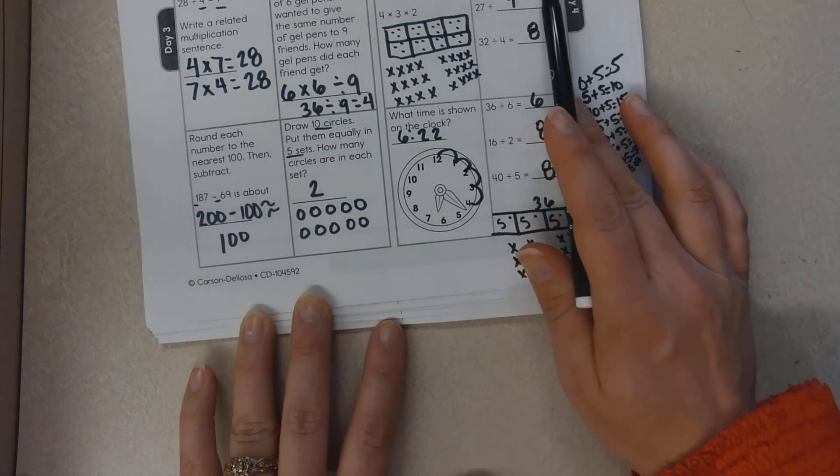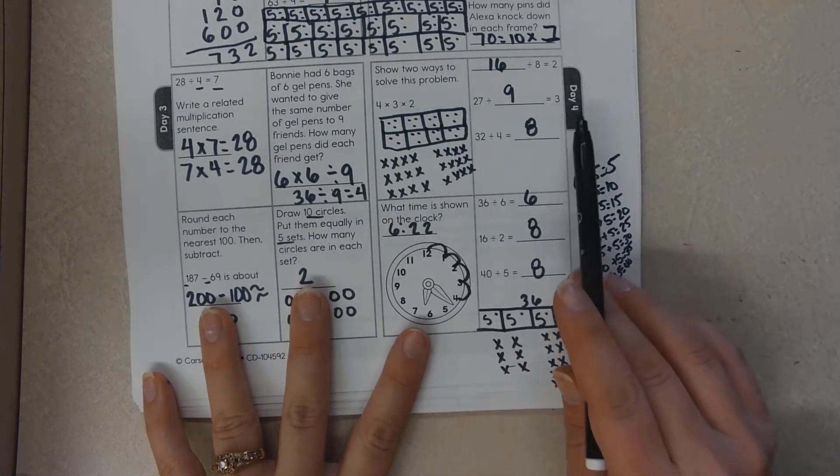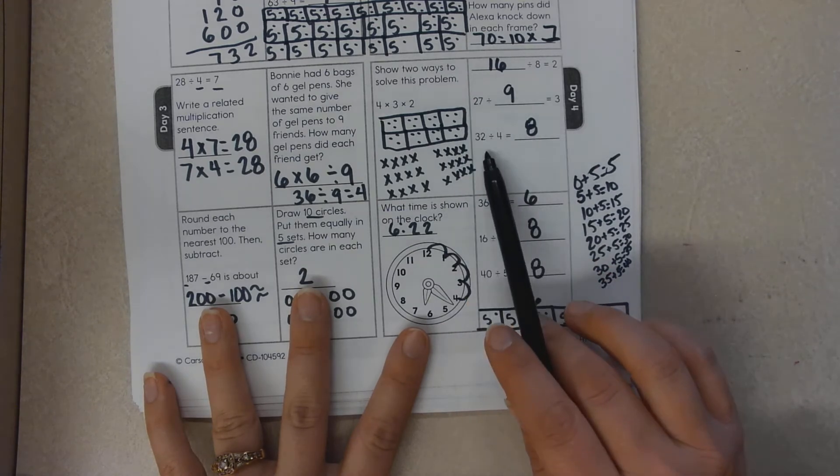16 divided by eight equals two. I found that out because two times eight equals 16. Three times nine equals 27. Eight times four equals 32.